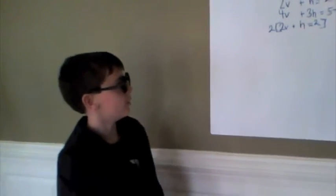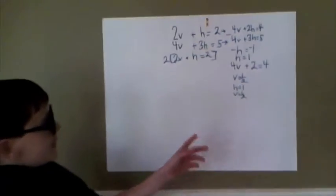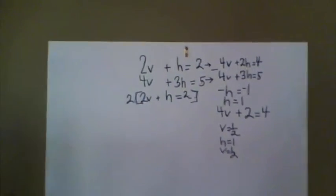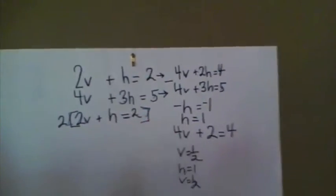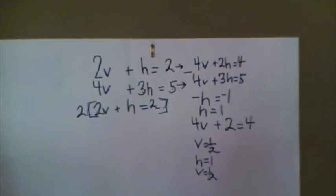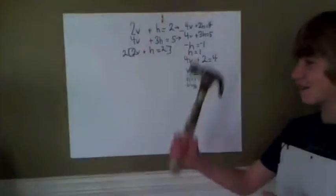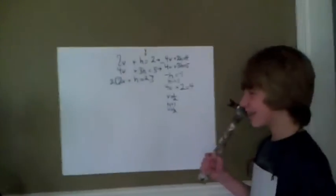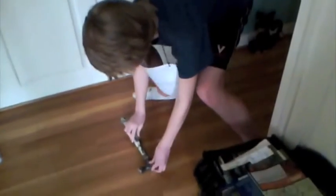For the next equation, our equation is 2v plus h equals 2, and 4v plus 3h equals 5. So, again, we have to get rid of Voldemort, because he's a meanie. I'm back, and I haven't forgotten what you said, so I have a hammer. Oh, no! It's Voldemort! Expelliarmus! Ah!